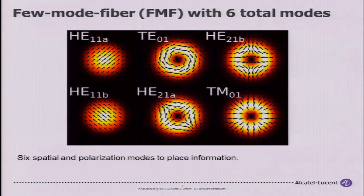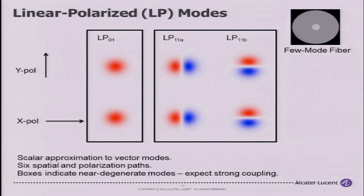These are the first six modes on which you can place information in a few-mode fiber. I showed the vector modes to show that the fiber modes are actually very complicated with complex polarization. Since fiber is a weakly guiding waveguide, we approximate them using the scalar approximation as linear polarized modes, which you can separate into both a spatial component and a polarization component. The boxes around the modes indicate the near-degenerate modes — within these groups you expect very strong coupling, and between the boxes, weaker coupling.